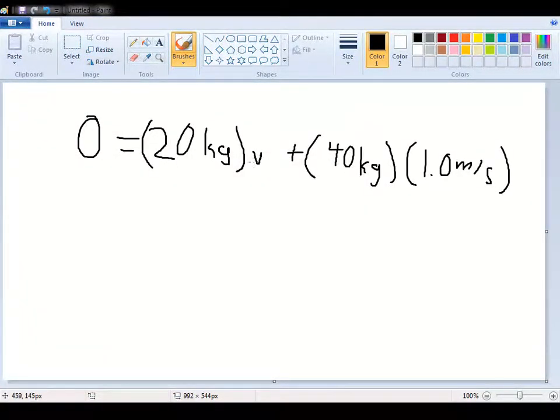So we need a value for V, for the girl's velocity, that will make this equal a term that will equal 40. So mathematically, we can figure out if 20V has to equal 40 total, as we can see here from the numbers. It's simple algebra.